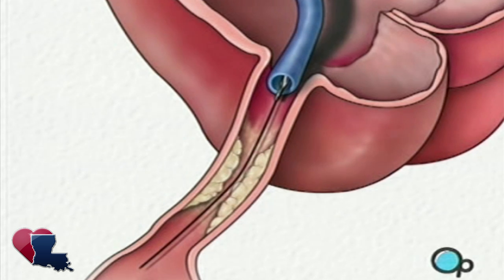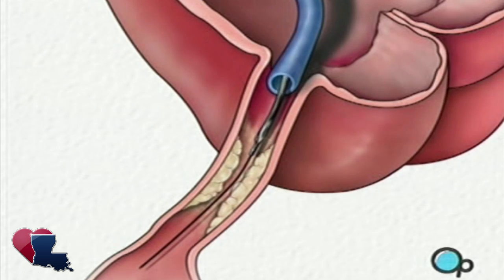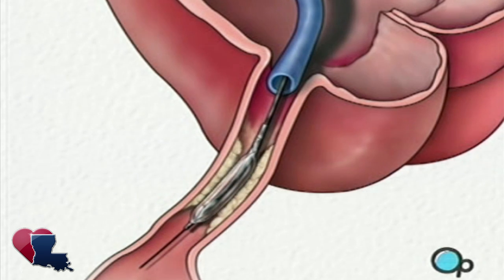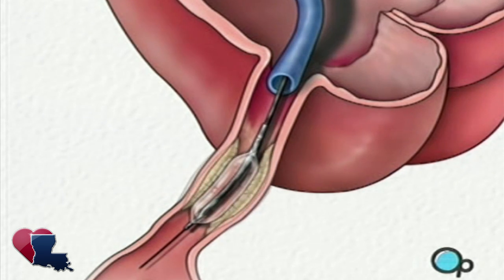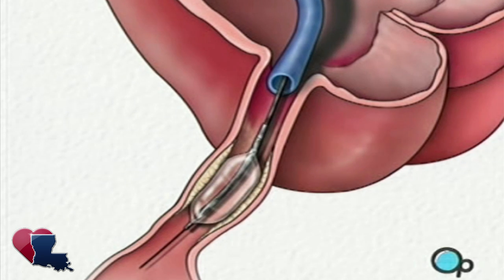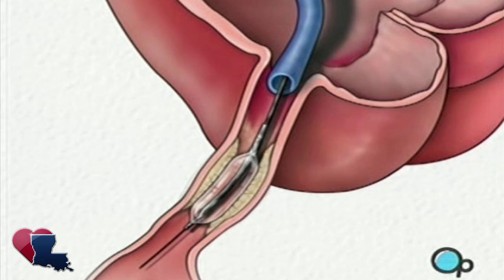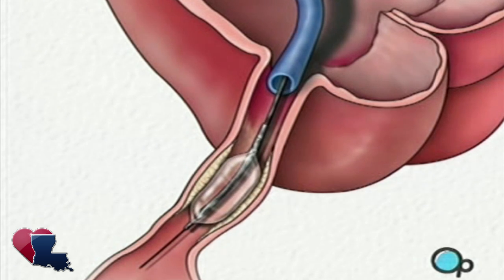This wire acts as a guide for the balloon catheter. It allows your doctor to position the deflated balloon precisely in the middle of the narrowest part of the coronary artery. The balloon is briefly inflated. As it expands, it squeezes the plaque deposits against the wall of the artery. It also stretches the artery wall and enlarges the channel through which blood flows. Your doctor will continue to inflate and deflate the balloon until normal blood flow has been restored.